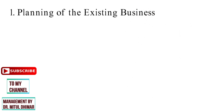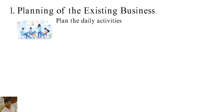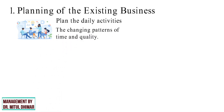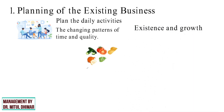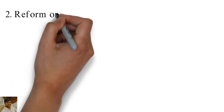Planning of existing business. It is necessary to plan the daily activities of the existing business. It is required for the operation of the existing business according to the changing pattern of time and quality. This planning is necessary for the existence and growth of the existing business. For example, McDonald's outlets plan for the requirement of vegetables on the basis of daily sales.